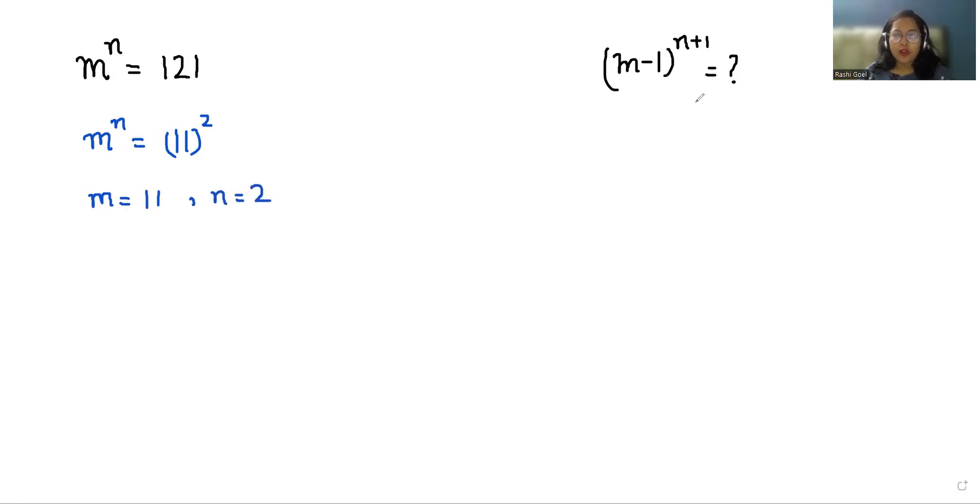Now we have to find the value of (m-1) to the power (n+1), so simply put the value. The value of m is 11, so 11 minus 1, and the value of n is 2, so 2 plus 1.